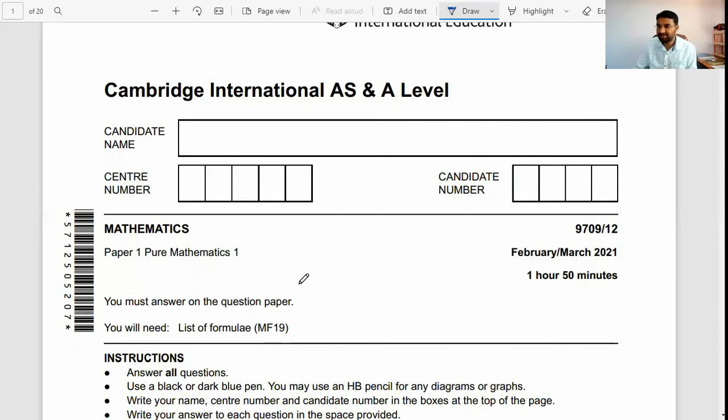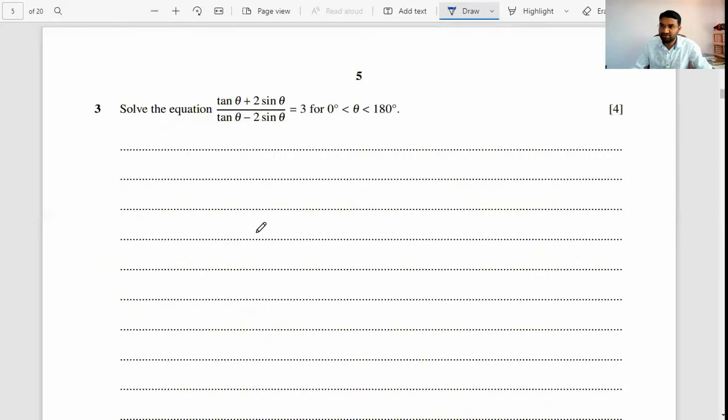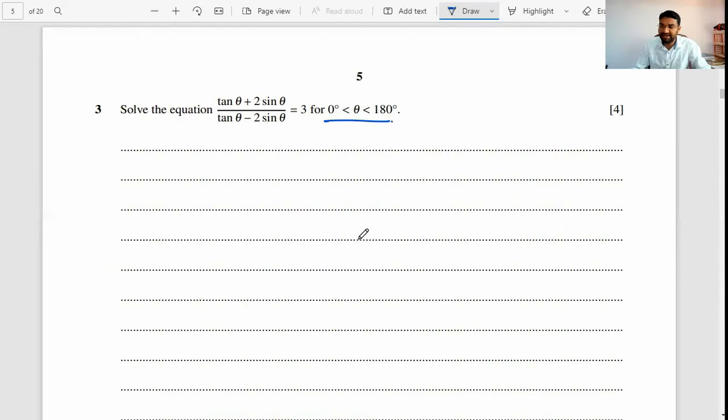This is a trigonometry question from a past year paper, Pure Mathematics 1, February and March 2021. We'll straight away move on to the question. The question says: solve the equation (tan θ + 2 sin θ)/(tan θ - 2 sin θ) = 3 for θ between 0 to 180 degrees.